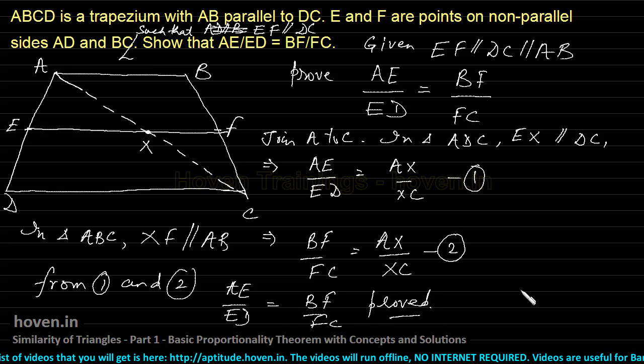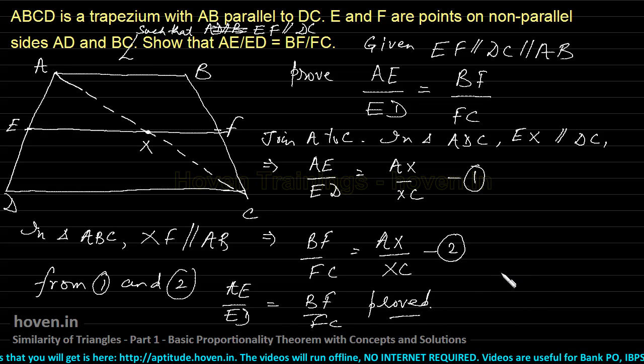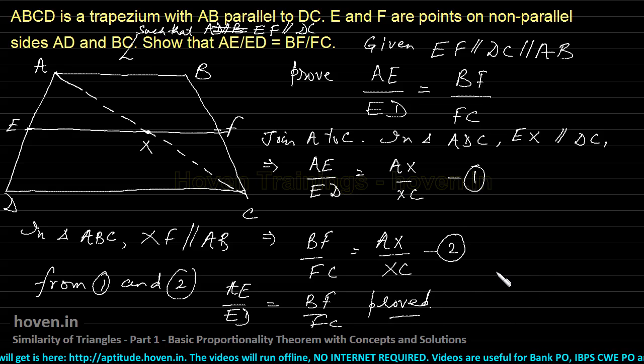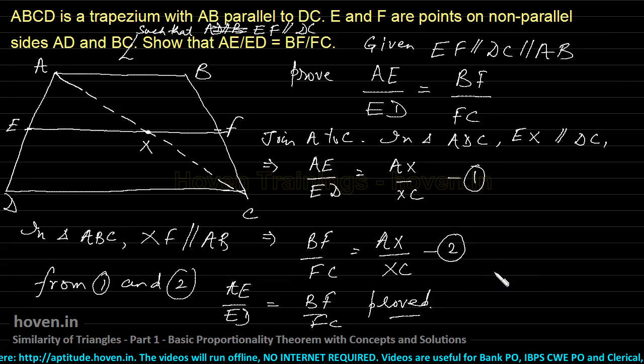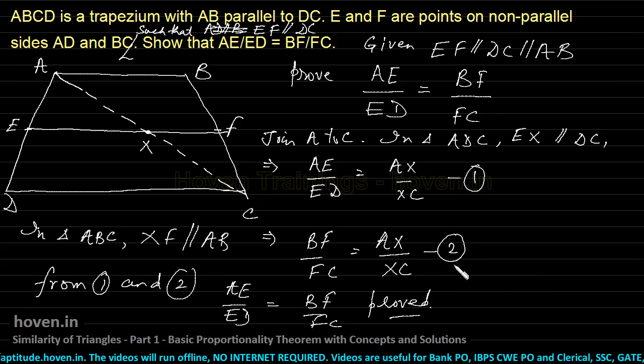From equations one and two, since both AE by ED and BF by FC equal AX by XC, we have AE by ED equals BF by FC, which is proved. This was a two-step process.